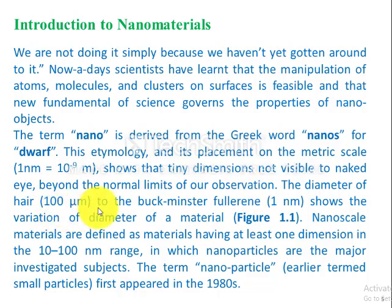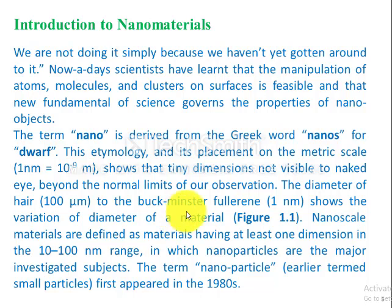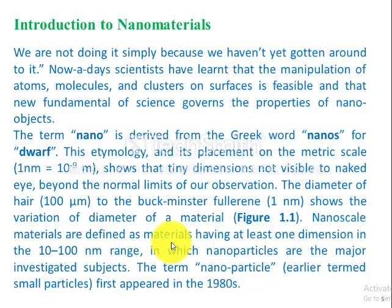It is well known that the diameter of a hair is 100 micrometers. If we compare the diameter of hair, which is 100 micrometers, to Buckminster fullerene, which is 1 nanometer in size — as shown in Figure 1.1 — nanomaterials are defined as materials having at least one dimension in the 10 to 100 nanometer range, in which nanoparticles are the major investigated subjects.